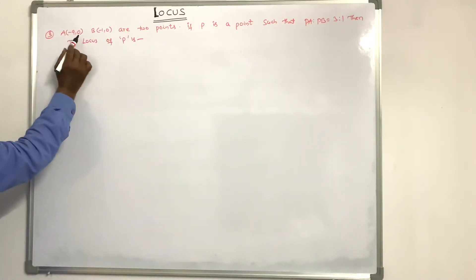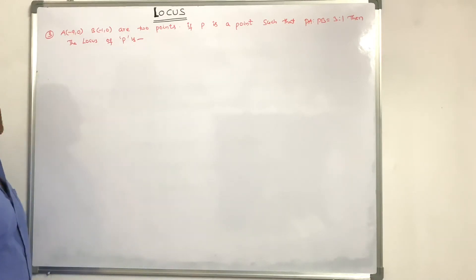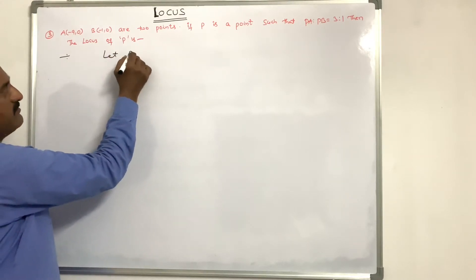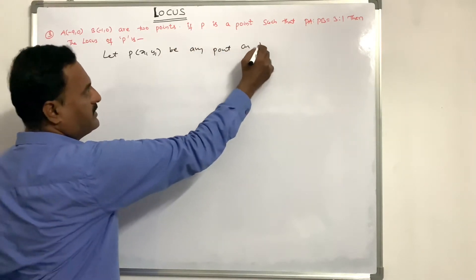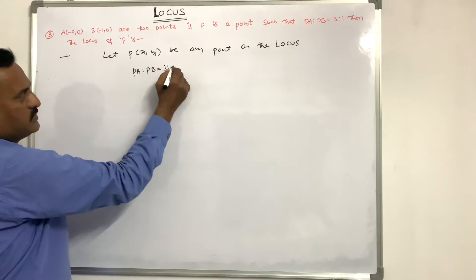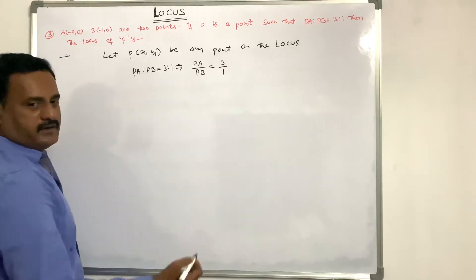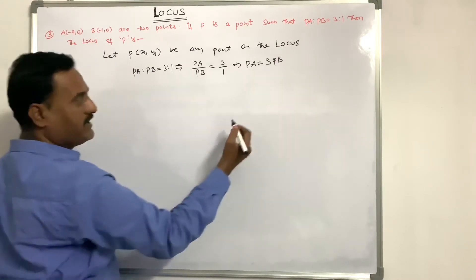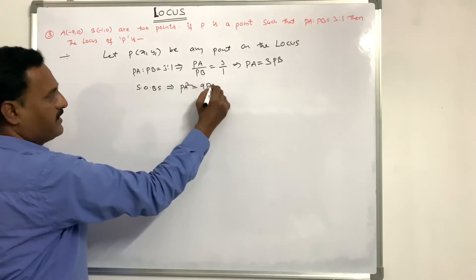If A(-9, 0) and B(-1, 0) are two points, and P is a point such that PA to PB is equal to 3 to 1, find the locus of P. Let P(x1, y1) be any point on the locus. Given PA:PB = 3:1, that is PA/PB = 3/1. Cross multiplying, PA = 3PB. Squaring both sides, PA squared = 9 PB squared.